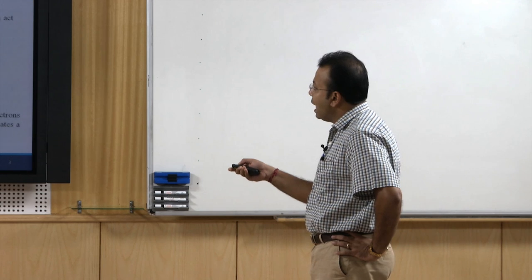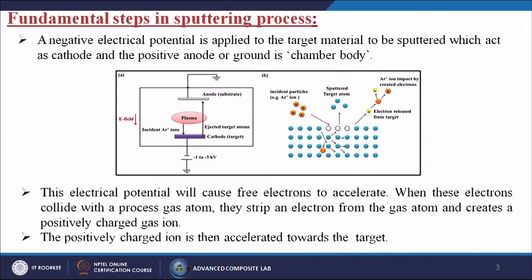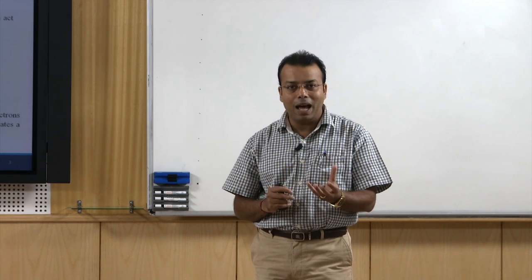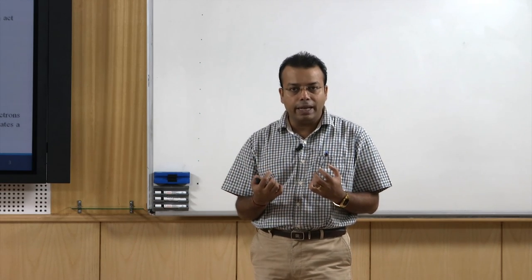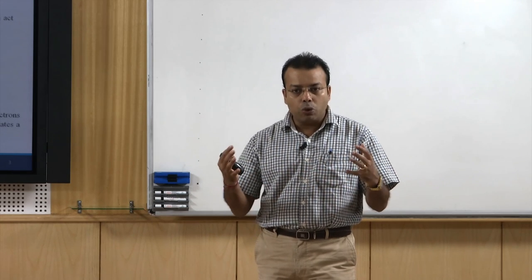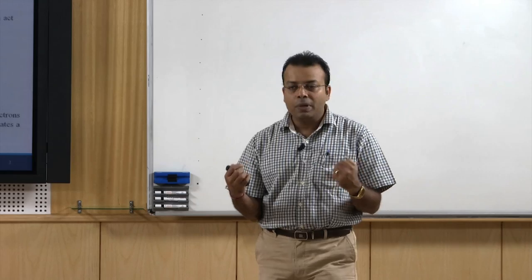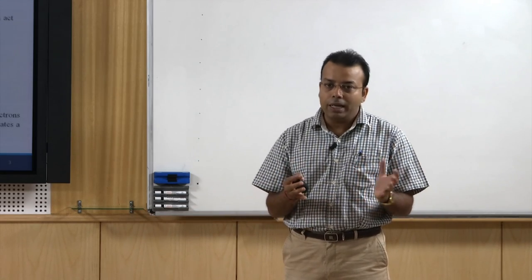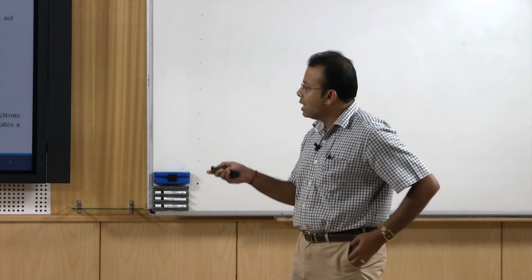Incident argon particles directly hit onto the sputtering materials, releasing atoms that deposit onto the surface. The argon ions again absorb electrons inside the chamber and become neutral. When they release energy, they generate a certain kind of plasma. That plasma then comes out as exhaust.